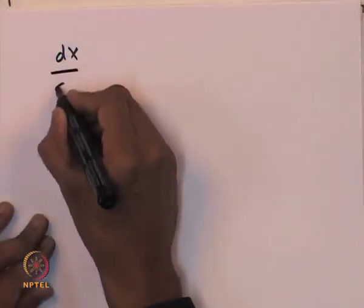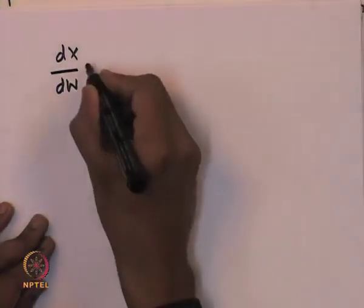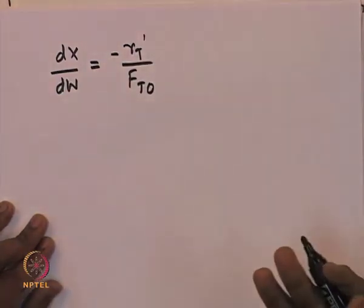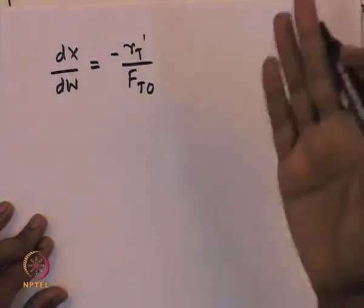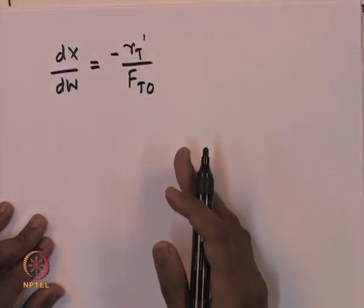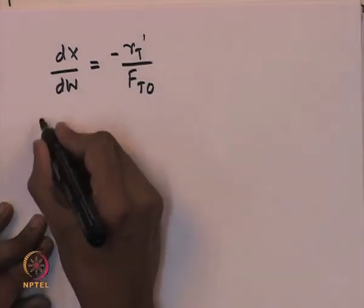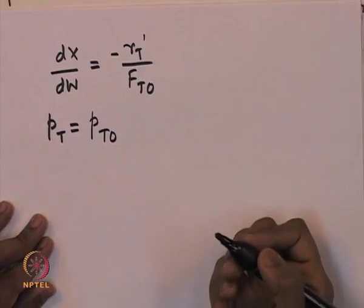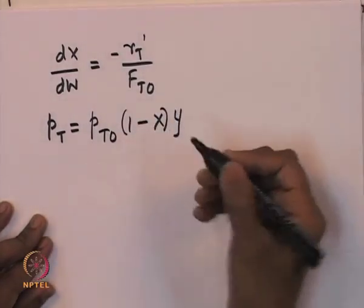While designing the reactor, we wrote a mole balance and found the equation that captures the conversion as a function of the weight of the catalyst. That turned out to be dx/dw, where x is the conversion and w is the weight of the catalyst, equal to −r′T divided by FT0, where −r′T is the rate at which toluene is consumed and FT0 is the initial molar feed rate of toluene. We also found that the partial pressure of toluene can be expressed as PT0 multiplied by (1 − x) multiplied by y, where y is the mole fraction.